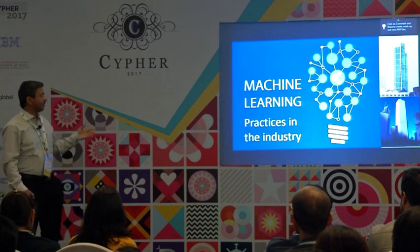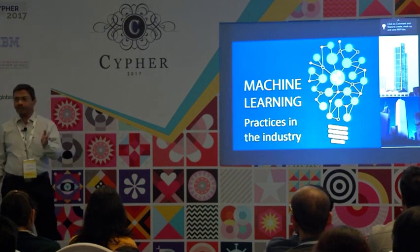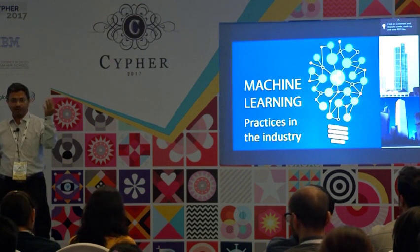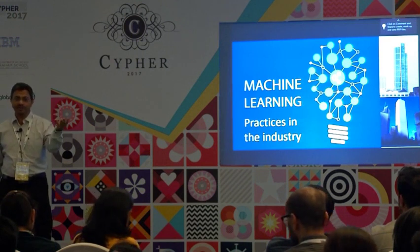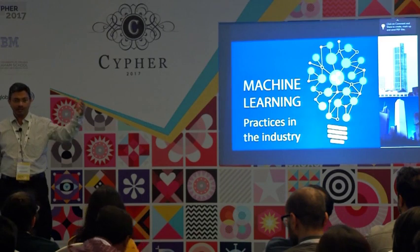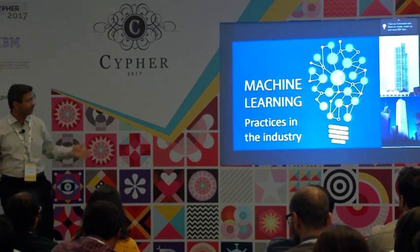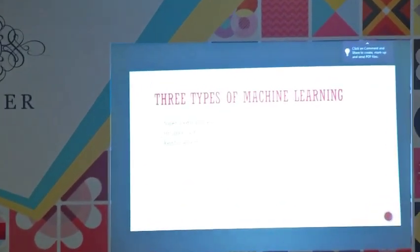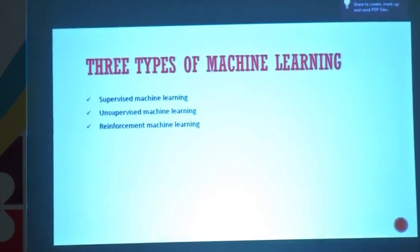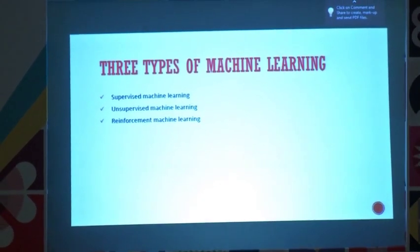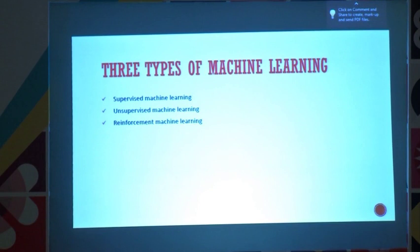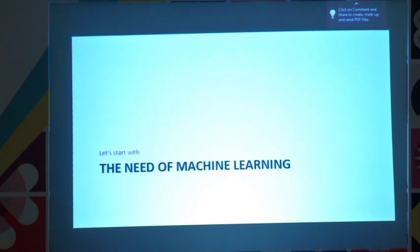Next part is machine learning. Let me talk about machine learning practices in the industry. There are three types of machine learning that are quite popular in the industry: supervised, unsupervised, and reinforced. Don't worry if you haven't understood yet — I'll explain what each is. But first, let's understand the need — why analytics professionals are paid, and what they really do.